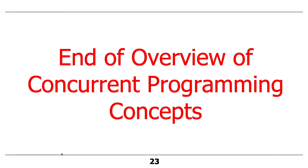That's the end of our overview of concurrent programming concepts. At this point, unless you already knew how to do programming with threads and synchronizers, you don't yet know enough to write a full program — though you might see how to spawn and start a thread in Java. We'll get into that as we go further into the discussions.